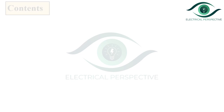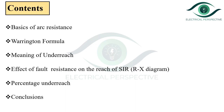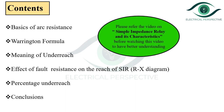These are the contents: basics of arc resistance, Warrington formula, meaning of underreach, effect of fault resistance on the reach of simple impedance relay using the RX diagram, percentage underreach, and conclusions.